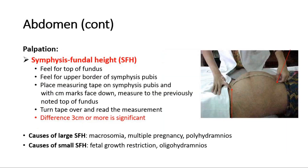Next is the symphyseal fundal height measurement. Feel for the top of the fundus and the upper border of the symphysis pubis. Place the measuring tape on the symphysis pubis with the centimetre marks facing downwards to prevent measurement bias, then measure to the top of the fundus. After measuring, turn the tape over and read the measurement in centimetres. A difference of 3 cm or more compared to the week of gestation is significant — indicating either a large or small symphyseal fundal height.